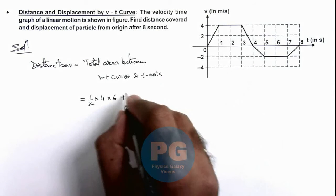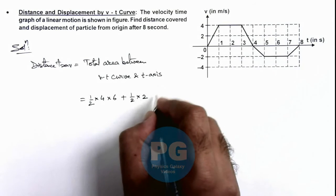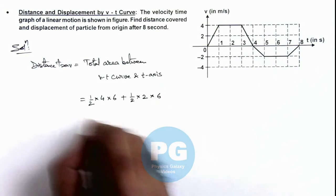So here we can write, this is 1/2 multiplied by its height which is 2, and again the sum of the two sides is 6.